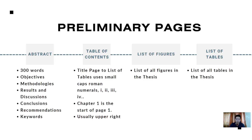We also have the table of contents — the title page through the list of tables uses small caps Roman numerals, just like what's displayed on screen. Chapter one is the start of page one, usually in the upper right corner of each page. We also have the list of figures, where all figures in the thesis are listed, and the list of tables, where all tables in the thesis are listed.